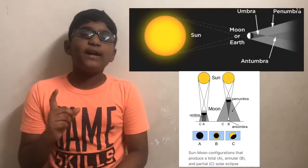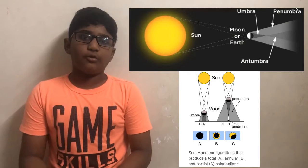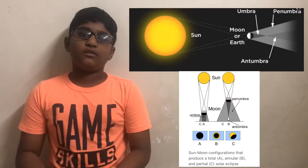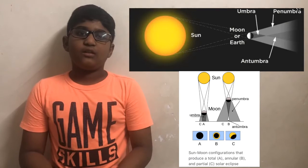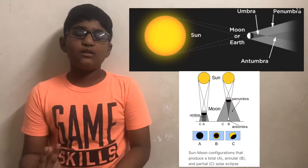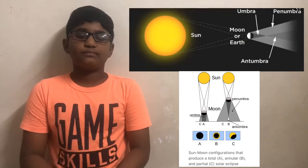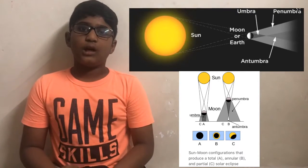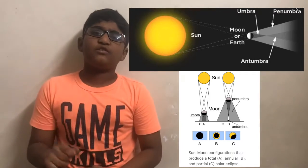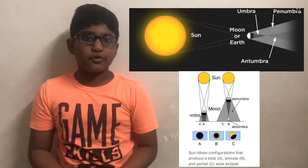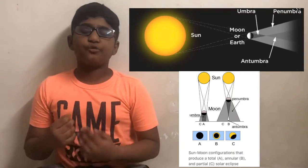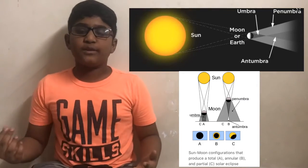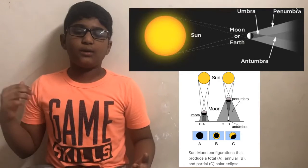There are three region parts of shadows which are applicable for both lunar and solar eclipse. They are Umbra, Antumbra, and Penumbra. When the object covers the full light source and does not let any light through, this is when a total eclipse occurs.